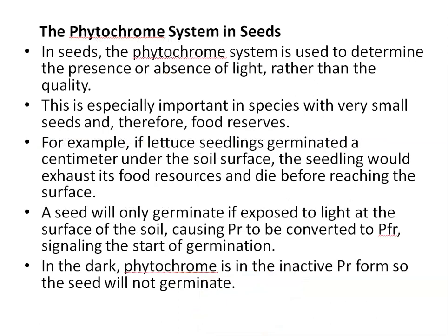Phytochrome system in seeds: in seeds, the phytochrome system is used to determine the presence or absence of light only, rather than the quality of light. This is especially important in species with very small seeds with limited food reserves. For example, if a lettuce seedling germinated a centimeter under the soil surface, it would exhaust its food resources and die before reaching the surface. A seed will only germinate if exposed to light at the soil surface, causing PR to be converted to PFR form and initiating germination. In the dark, phytochrome remains in the inactive PR form, so the seed will not germinate.